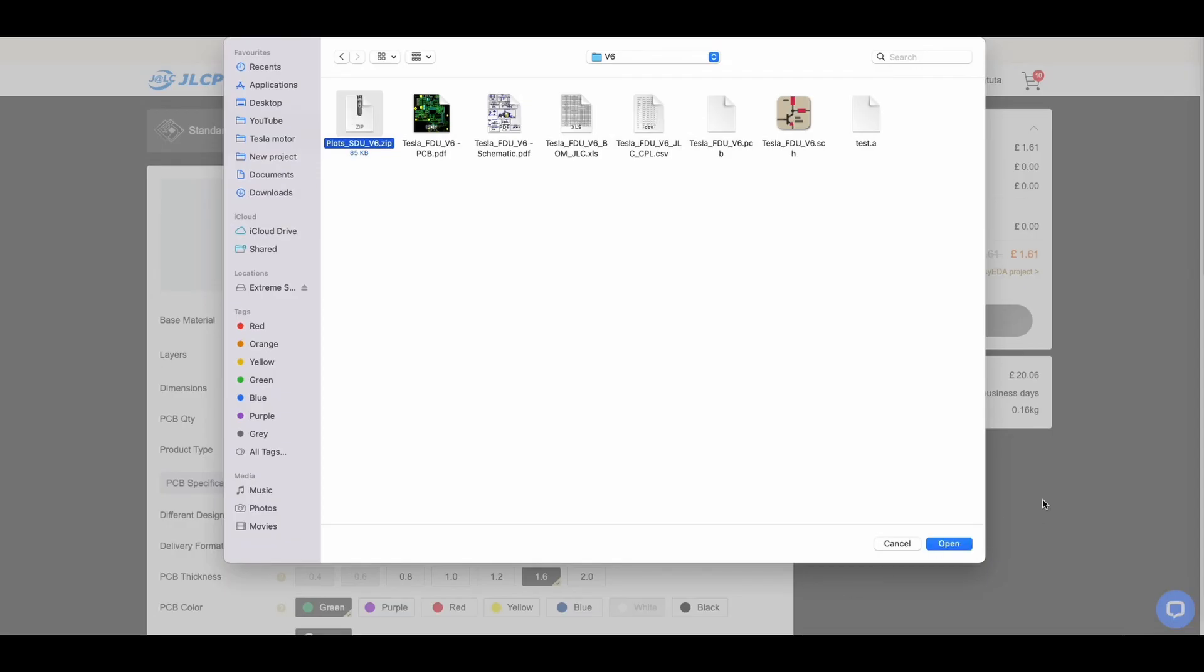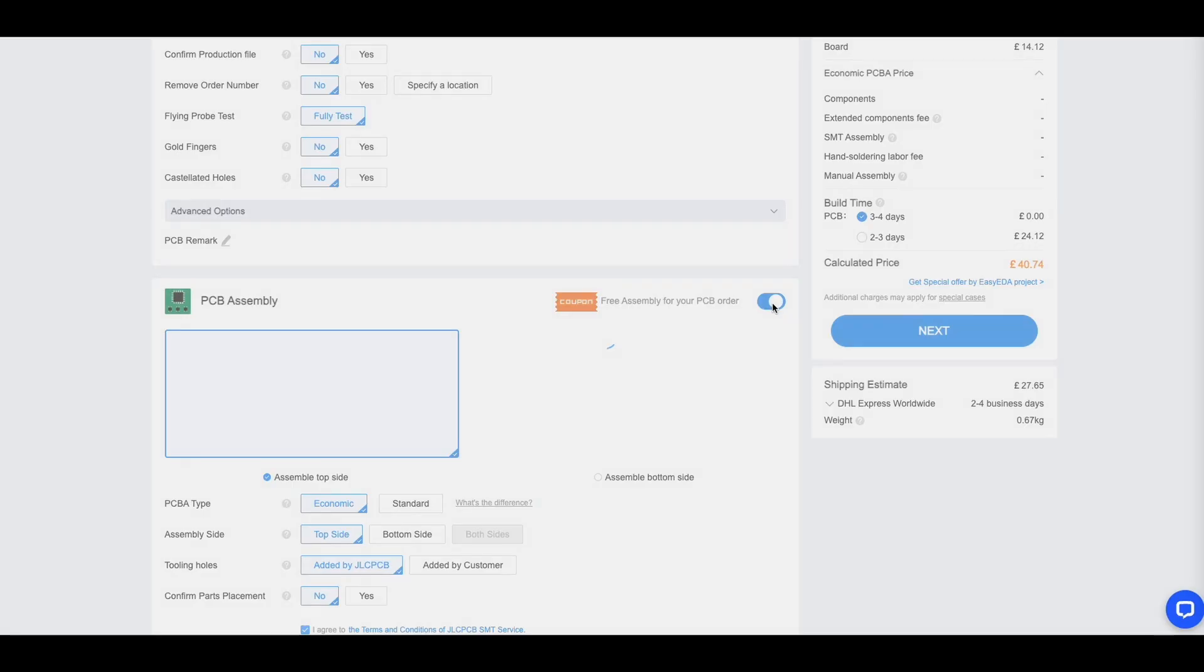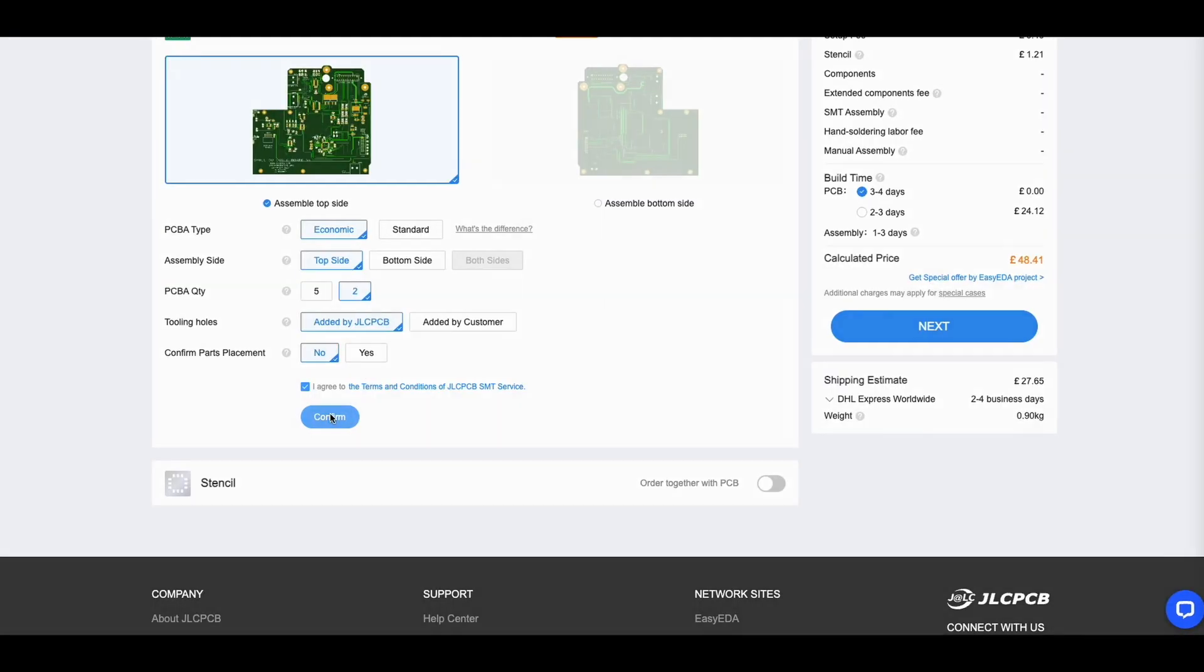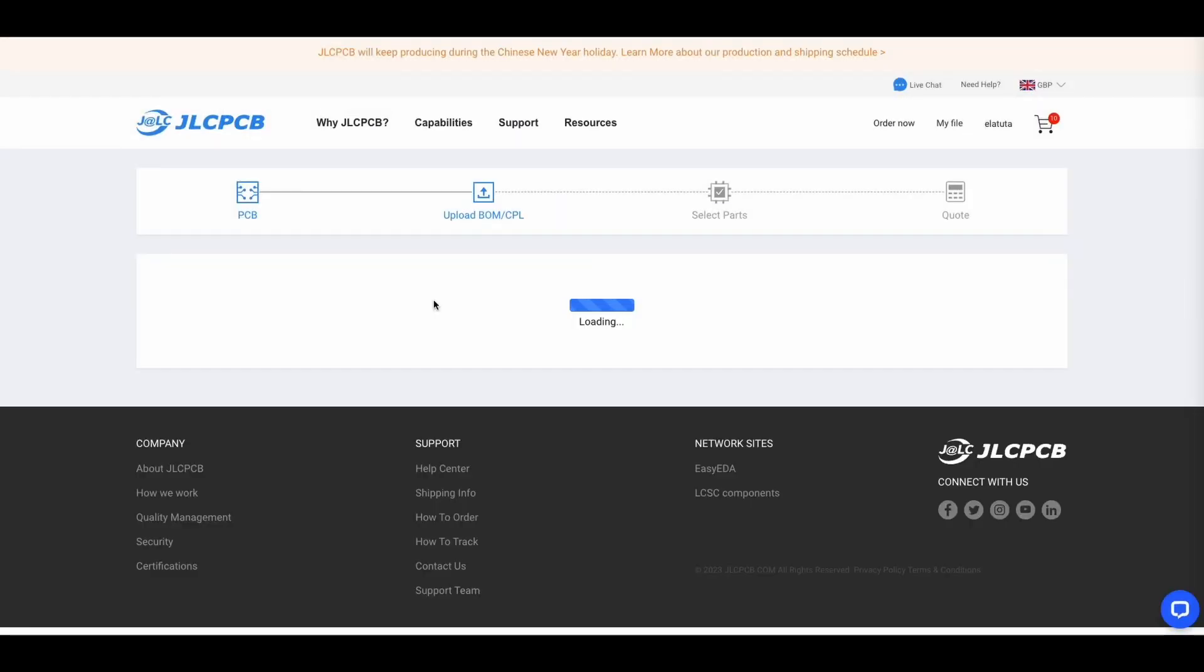Of course, after I placed an eBay order for the Tesla motor, I needed to get a version of the open inverter board that will work with the Tesla small drive unit. I had downloaded the design files from Damien's GitHub and went to JLCPCB to get the board ordered.